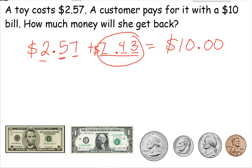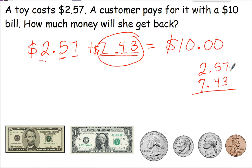And we can double-check by adding it: $2.57 plus $7.43. 7 plus 3 is 10, carry the 1. 1 plus 5 is 6, plus 4 is 10, carry the 1. 1 plus 2 is 3, plus 7 is 10. So my answer is correct.